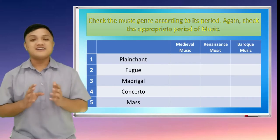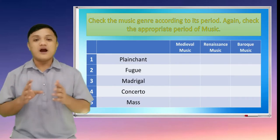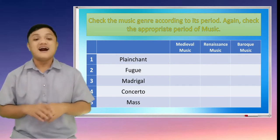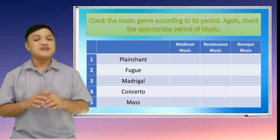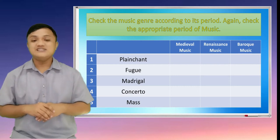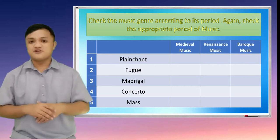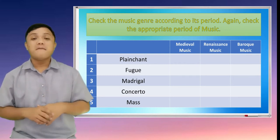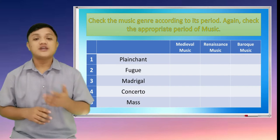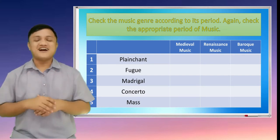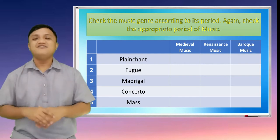Now, on the next set of table, you are also going to check the music genre according to its period. Check the appropriate period of the music genre. Number 1. Plain chant — is it from medieval, renaissance, or baroque? Number 2. Fugue, madrigal, concerto, and mass. Great! You have done well. You are now ready for the discussion.